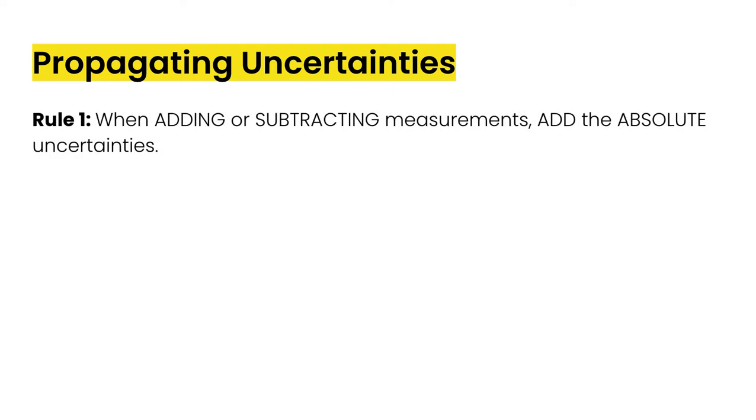Now, we can take those absolute and percent or relative errors, and we can propagate those uncertainties as we're working through different calculations of measured values. There are two key rules when it comes to propagating uncertainties. The first rule is that when we're adding or subtracting measurements, we add the absolute uncertainties.